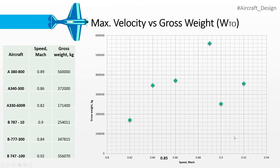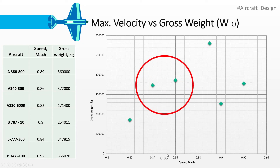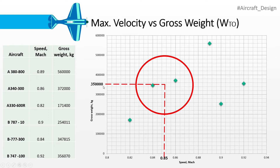Next, a graph is plotted between maximum velocity and gross weight. Scattered points are obtained and an optimum circle is drawn nearby 0.85 Mach number. A vertical line is drawn to the center of the circle, then a horizontal line to the y-axis. The value where this line meets the y-axis gives the optimum gross weight for the initial sizing.